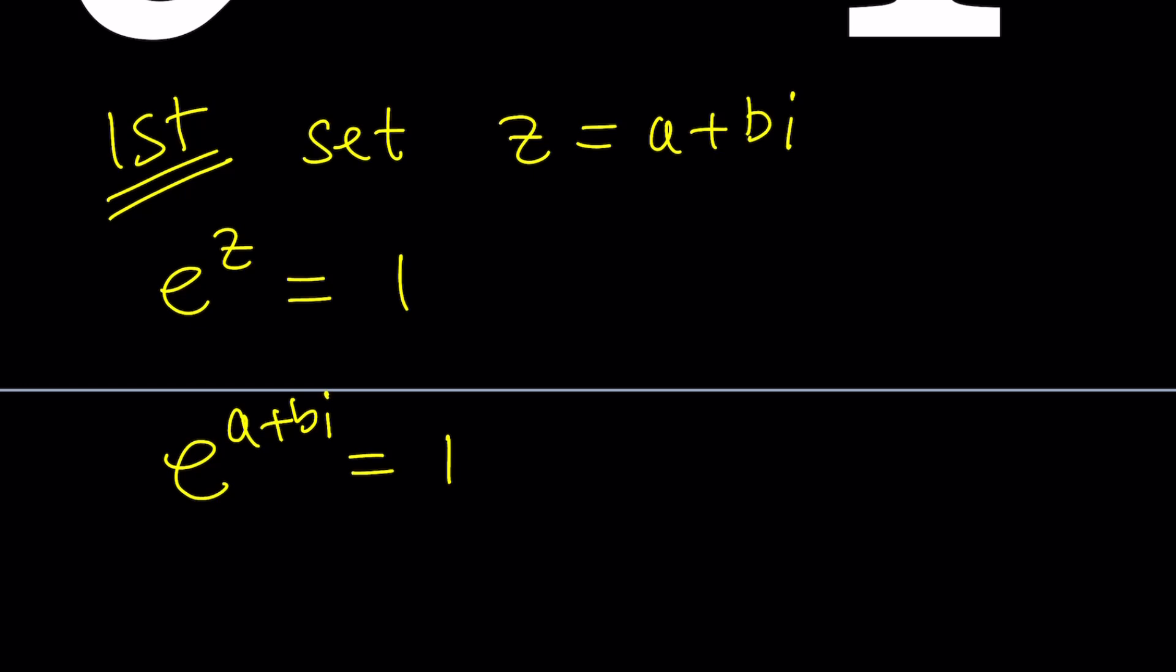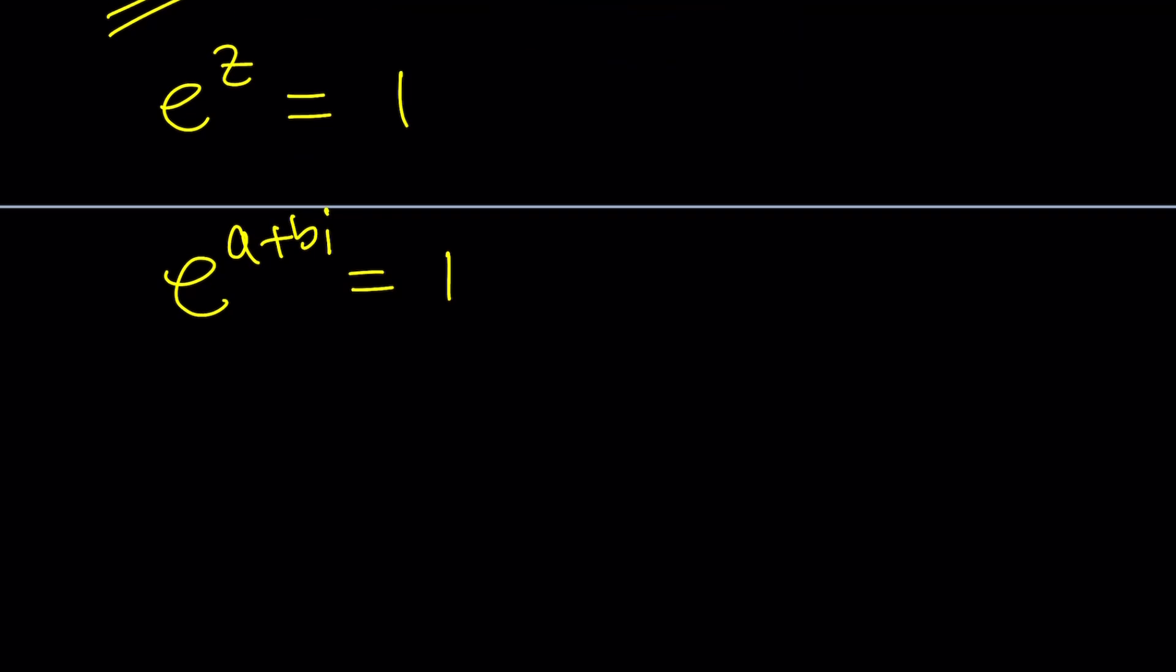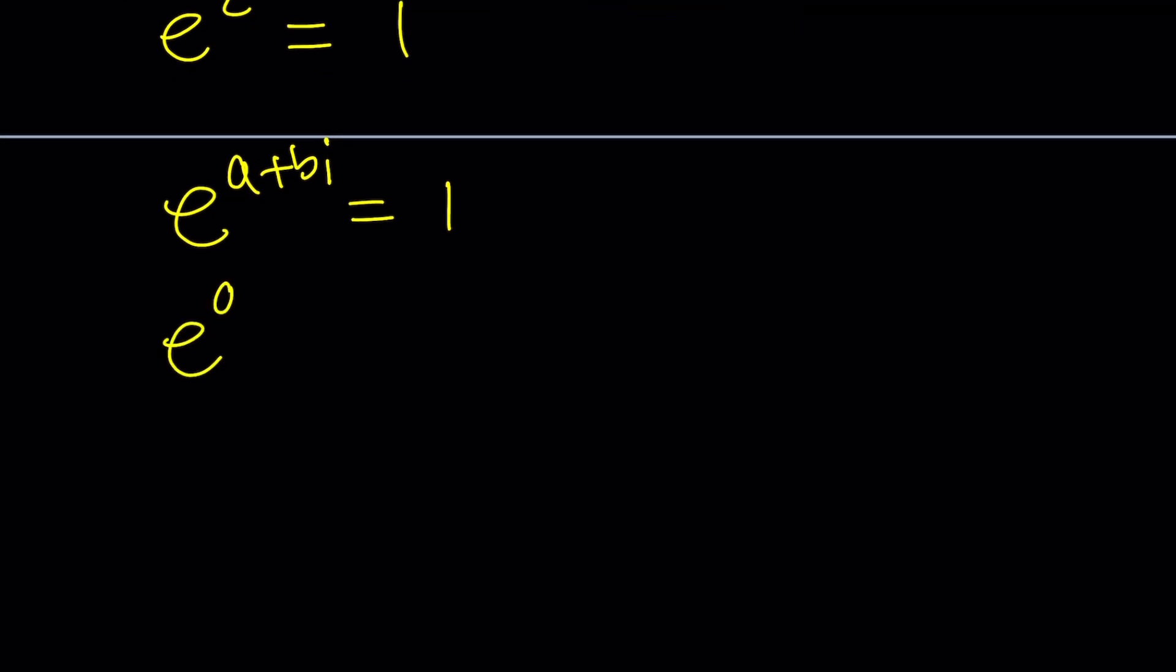But the nice thing is we can separate this. We can split it into two factors. Because the exponents are added I can write this as e to the power A times e to the power B I equals one.